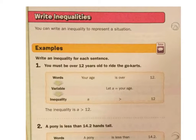Let's look at some examples here. Number one, you must be over 12 years old to ride the go-karts. So if you're doing it with words, your age is over 12. Okay, now throw a variable in there. Let A equal your age, and then if you want to write it into an inequality, it's going to be your age has to be greater than 12.